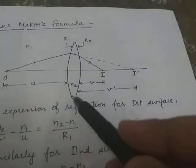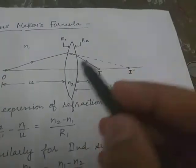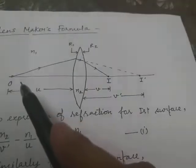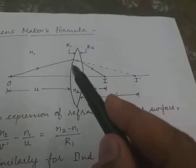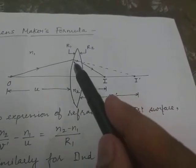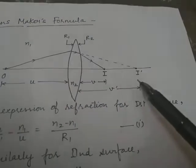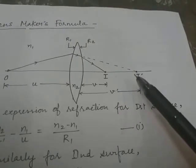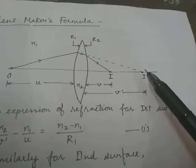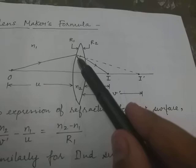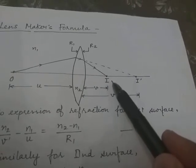A convex lens is a converging lens, so it converges light rays twice — firstly from the first surface and secondly from the second surface. In the ray diagram, a point object at O sends a light ray that strikes the first surface. Considering only the first surface, the light ray converges and strikes the principal axis at point I'. This intermediate image I' is formed by refraction through the first surface only. The light ray refracted by the first surface then strikes the second surface, converges further, and strikes the principal axis at point I, which becomes the final image.